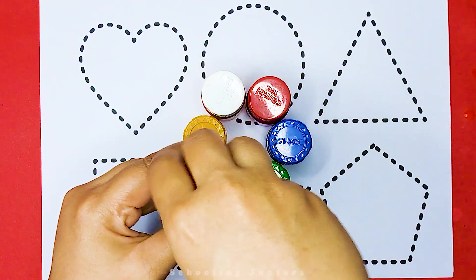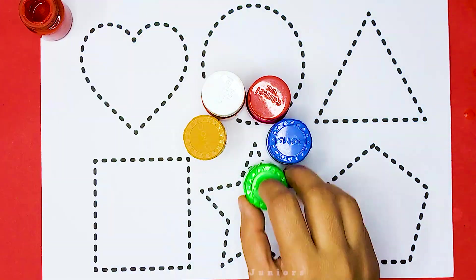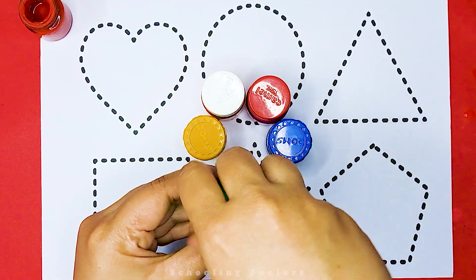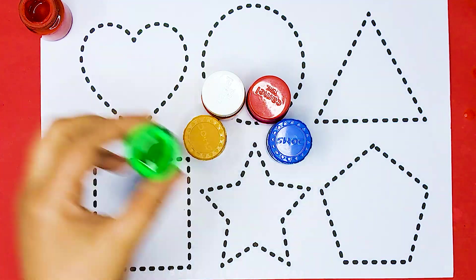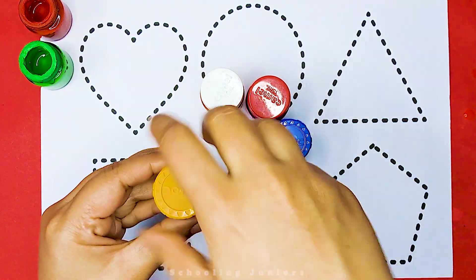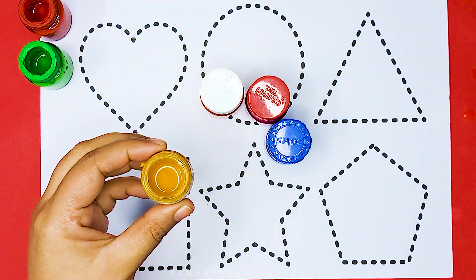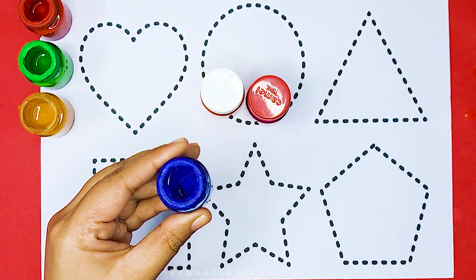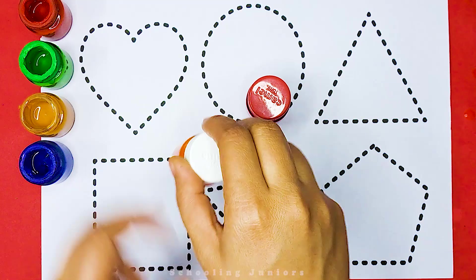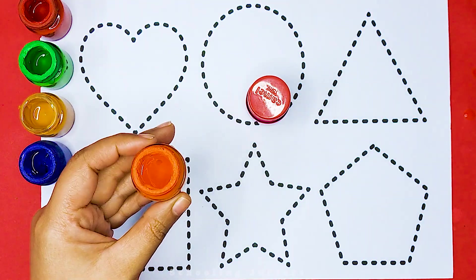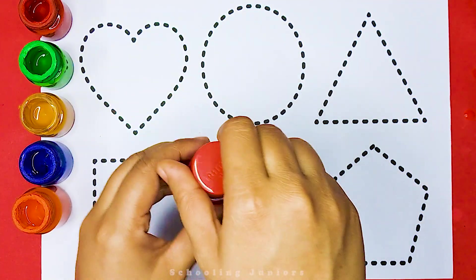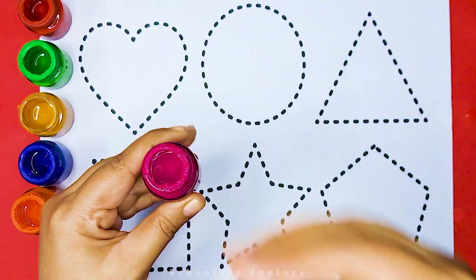This is red color. This is green color. This is golden color. This is blue color. This is orange color. This is pink color.